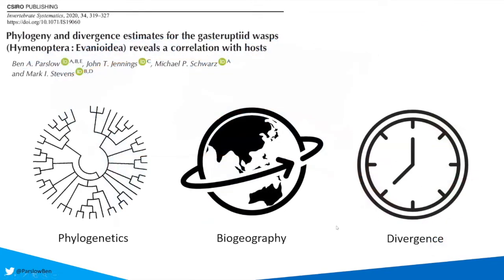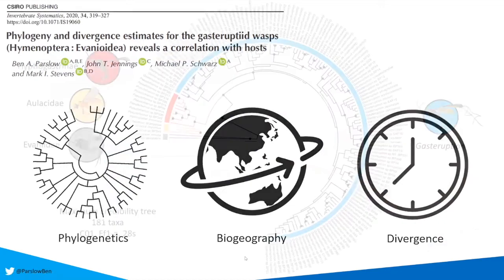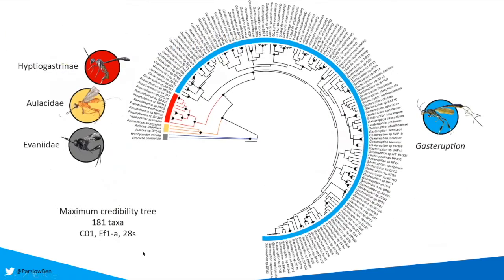I wanted to try to test this hypothesis. We wanted to look at the internal relationships of the family in more detail, map out the biogeography and also estimate the divergence times. To do this, we generated a multi-locus data set using three fragments: CO1, EF1α and 28S. As you can see from the colours, we have a really large inclusion of Gasteruption, a small Hyptiogastrinae, and our outgroups are Aulacidae and Evaniidae. Black dots represent 100% posterior probability on this tree.